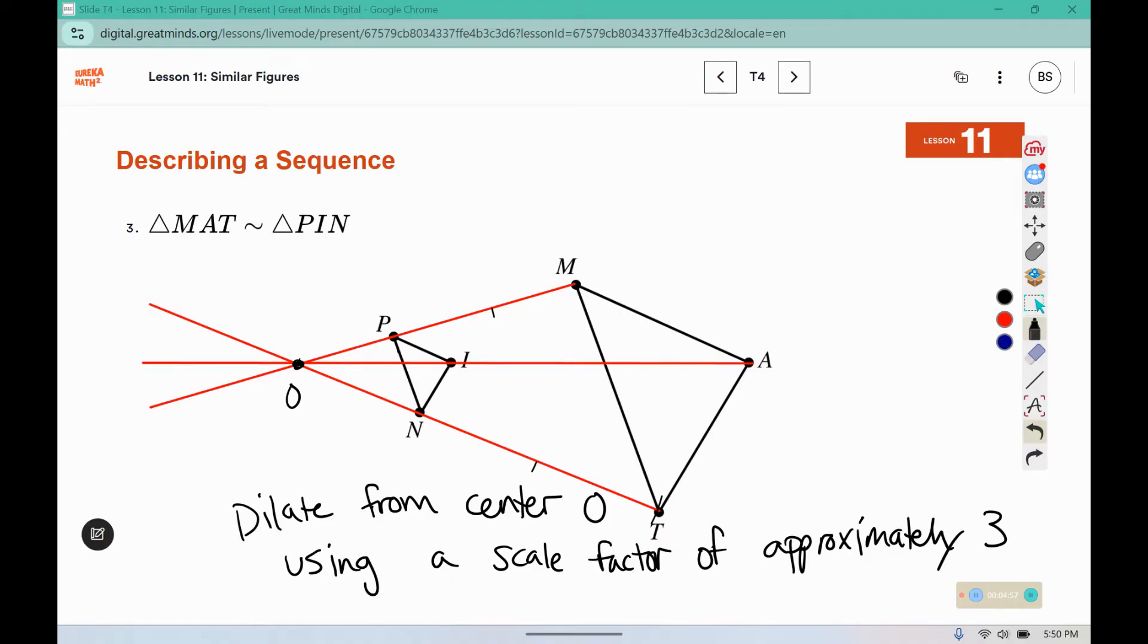So using a scale factor of approximately three. Now if our lines were perfect, it should work out to be a good scale factor. There is some human error here.